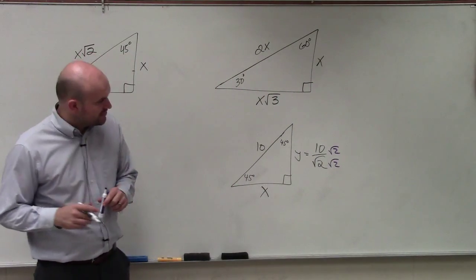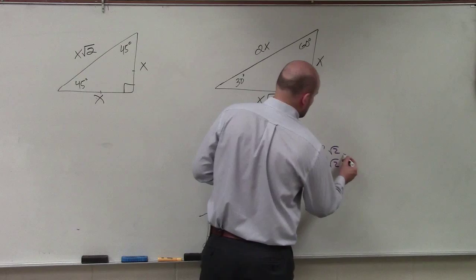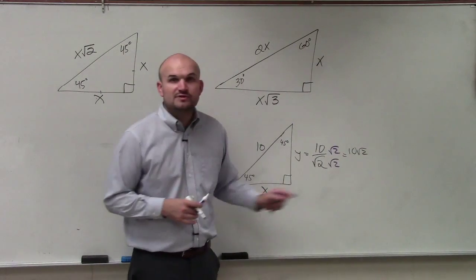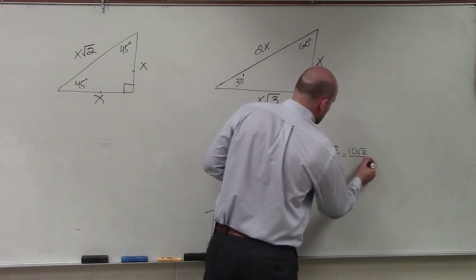So we multiply by the square root of 2 over square root of 2. So 10 square root of 2 is going to leave us 10 square root of 2. And then square root of 2 times square root of 2 is going to leave us with 2.